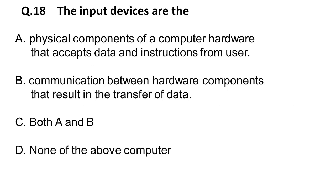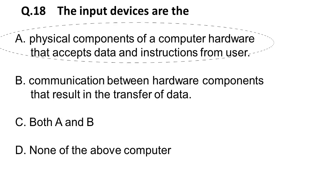The next question: input devices are — option A is physical components of computer hardware that accept data and instructions from the user; option B is communication between hardware components that results in the transfer of data (this is a USB); option C is both A and B; option D is none of the above. The correct answer is A — physical components of the computer hardware that accept data and instructions from the user.